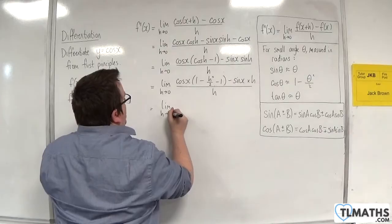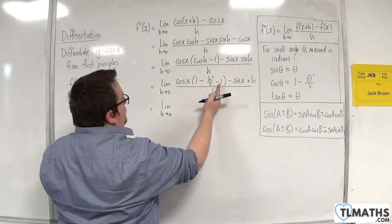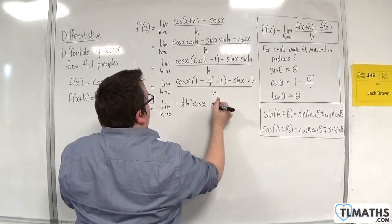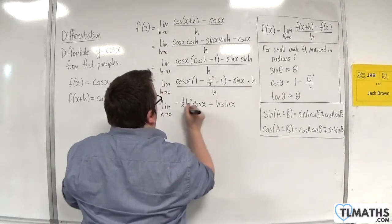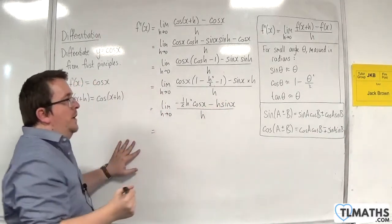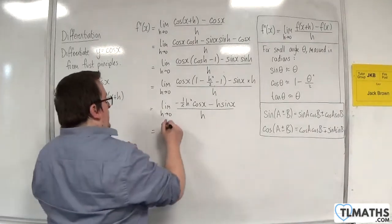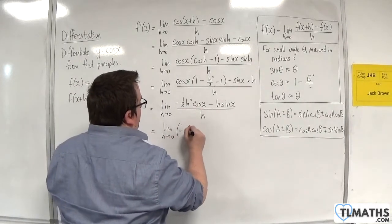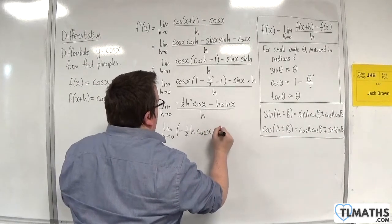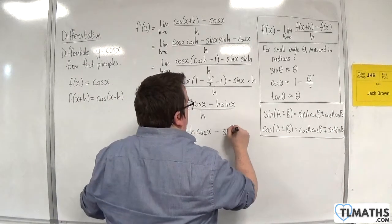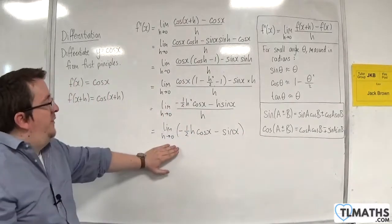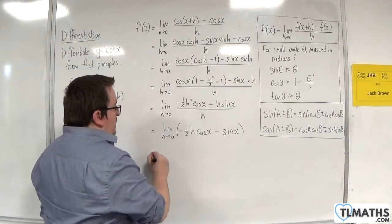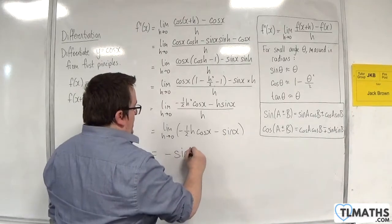So we have the limit as h tends to 0. The ones cancel each other out, so I'm going to have minus one half h squared times cosine x, take away h sine x, all over h. Now I can divide through by h — the h cancels here, giving minus one half h cosine x, and the h cancels here, giving take away sine x. So as h tends to 0, this term tends to 0 because h is multiplying it, and I'm left with minus sine x.